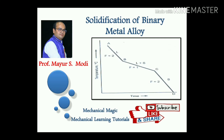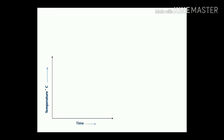Welcome to my YouTube channel, Mechanical Magic Mechanical Learning Tutorials. Today we will be discussing the solidification of binary metal alloys — metal A and metal B — which together form a new metal called a binary metal alloy. This covers the theory of solidification, or transformation from higher temperature to room temperature, from liquid phase to solid phase.